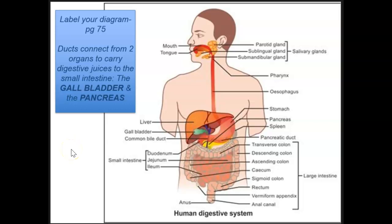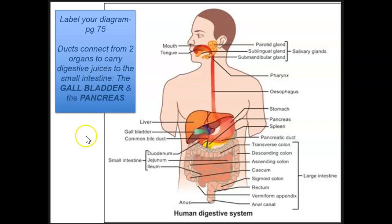Ducts connect from two organs to carry digestive juices, which are chemicals that aid in digestion, to the small intestine — in particular, the duodenum of the small intestine. And those two organs are the gallbladder and the pancreas. So let's label the diagram that you have on page 75.